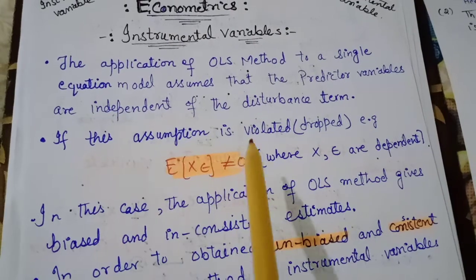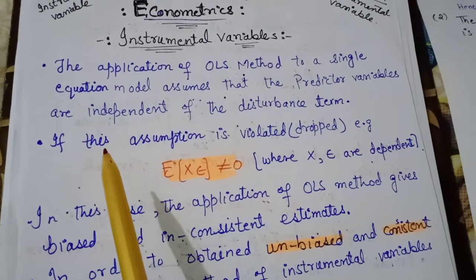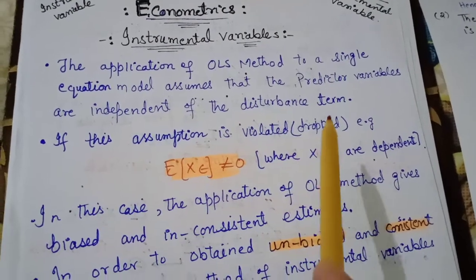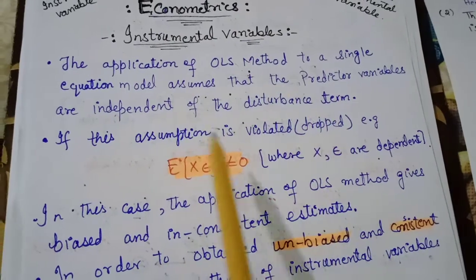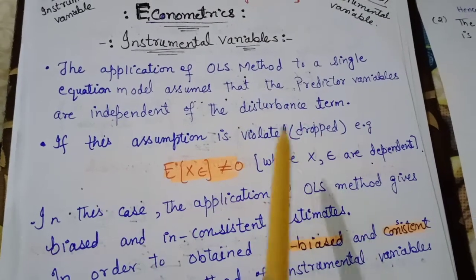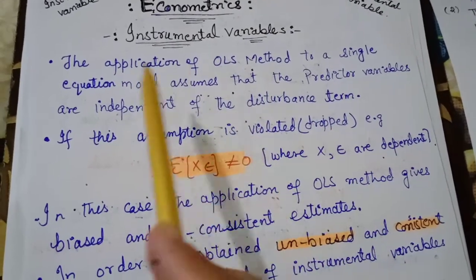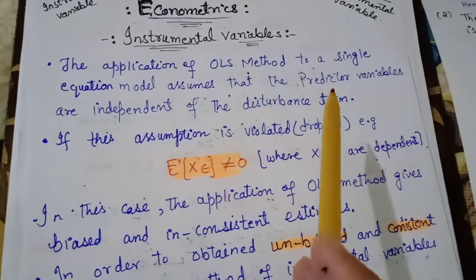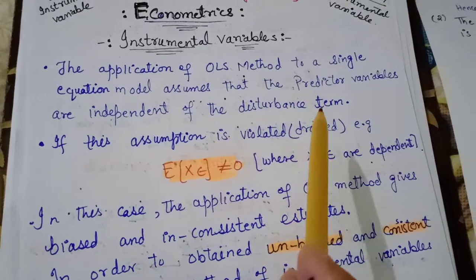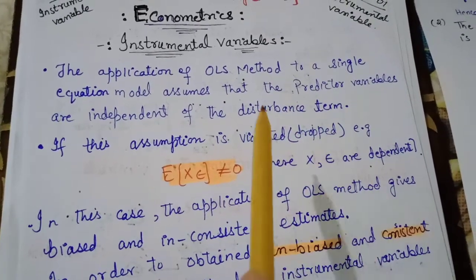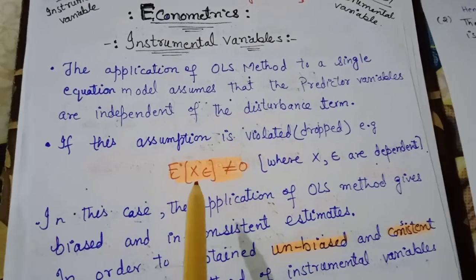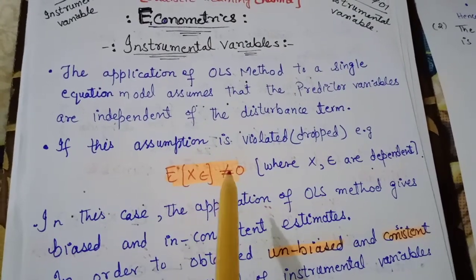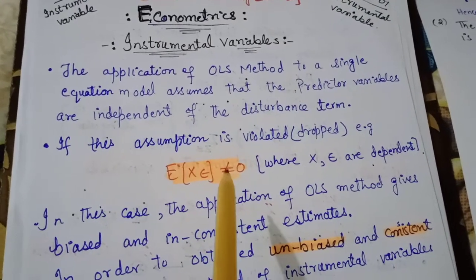When this assumption is violated and dropped — meaning predictor variables depend on the disturbance term — we say E(Xε) ≠ 0. The assumption that X and epsilon are independent is dropped.